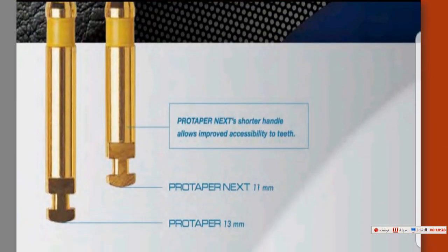Another feature of this system, especially for posterior teeth, is the shorter handle. ProTaper Universal has a 13 mm handle, while ProTaper Next has an 11 mm handle. This is a very important feature to provide better accessibility, especially for posterior teeth.